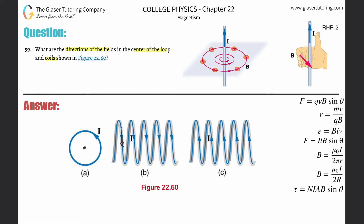The current is going downward on this side. If you point your thumb downward — using right-hand rule number two — your fingers then curl to the right, around that particular part. The same applies here, here, here, and here; they're all coiling into the center of the loop. Now if you look at the back, the current in the coil on the back is pointing up. Point your thumb up, and you're wrapping around that coil in a counterclockwise fashion — but that's coming into the loop as well. So no matter how you view this, the field is going to be through the loop and to the right.